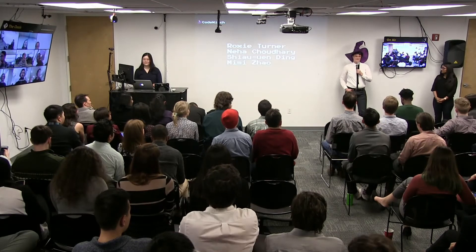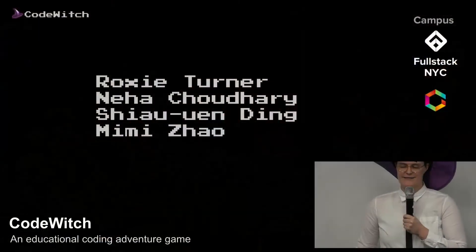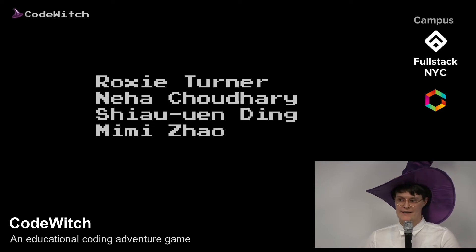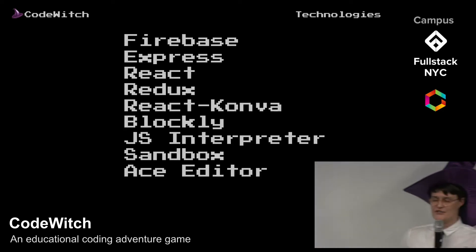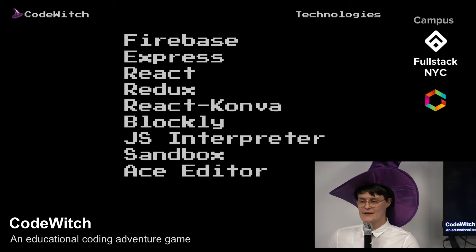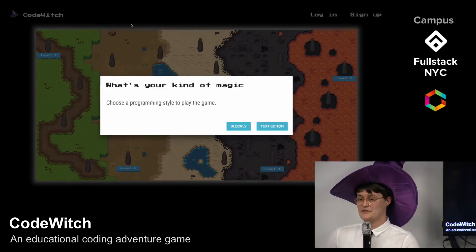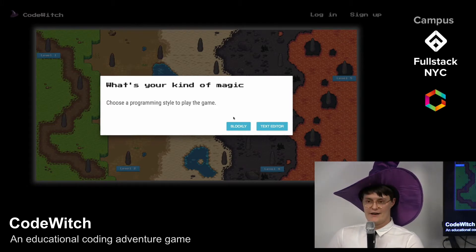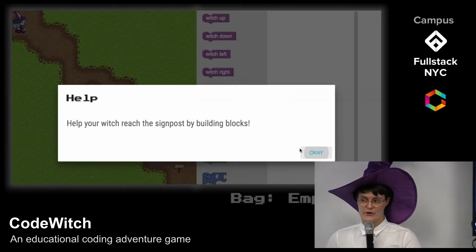Thank you for joining us this afternoon. My name is Roxy Turner, and I'm here with my colleagues Neha Chowdhury, Xiao Wen Ding, and Mimi Zhao to present CodeWitch, an educational game built using Firebase, Express, React, Redux, React Konva, Blockly, JavaScript Interpreter, Sandbox, and the Ace Editor. CodeWitch is a game for kids age 5 to 13 learning JavaScript and programming skills.